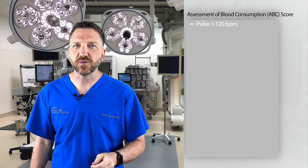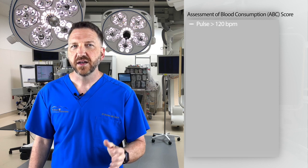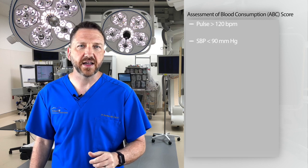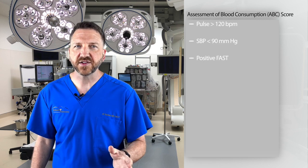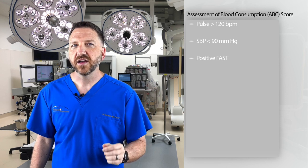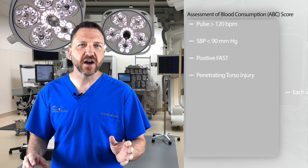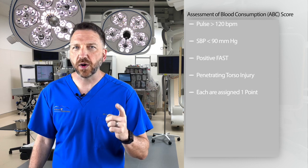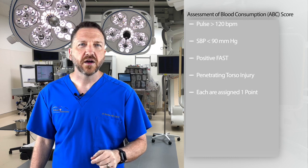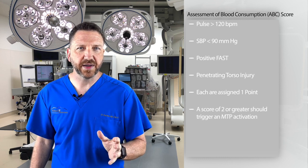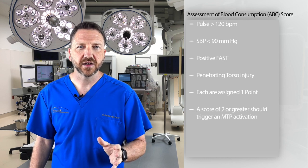The ABC score consists of four variables: pulse greater than 120, systolic blood pressure less than 90, a positive FAST, and penetrating torso injury. Each variable is assigned one point. A score of two or more warrants an MTP activation.